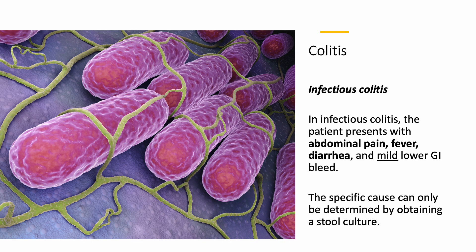In infectious colitis, the patient presents with abdominal pain, with fever and diarrhea, and only a mild lower GI bleed. The specific cause can only be determined by obtaining a stool culture.